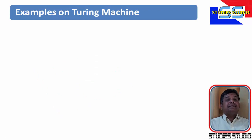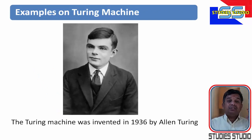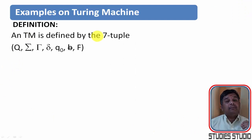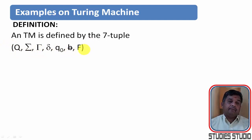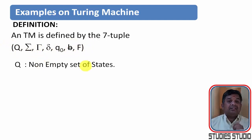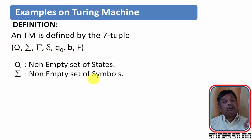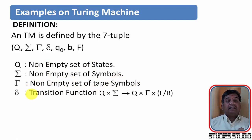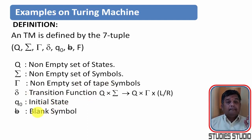Before we start the examples on Turing Machine, you must know that Turing Machine is invented by Alan Turing in 1936. We know that any Turing Machine is defined by these 7 tuples: Q, Sigma, Tau, Delta, Q0, B and F. Here, Q is the non-empty set of states, Sigma is the non-empty set of symbols, Tau is the non-empty set of tape symbols, Delta is the transition function, Q0 is the initial state, B is the blank symbol and F is the final state.